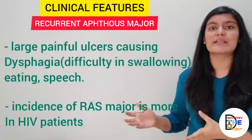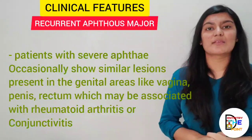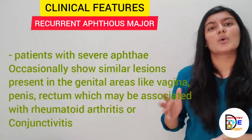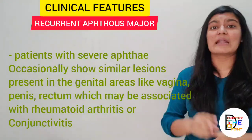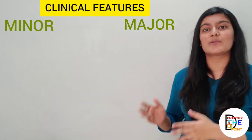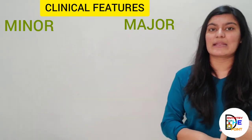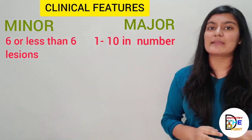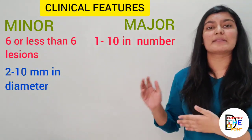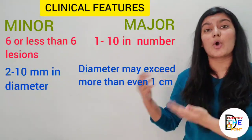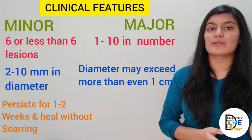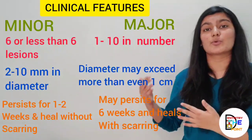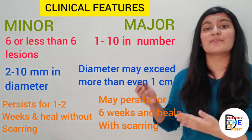The incidence of these ulcers is more commonly found in HIV-positive patients. Patients with severe aphthae occasionally show similar lesions in the genitals — vagina, penis, or rectum — which may be associated with rheumatoid arthritis or conjunctivitis. There are three distinguishing points from Recurrent Aphthous Minor: first, the number of ulcers in major can be 1 to 10 (versus 6 or fewer in minor); second, the diameter may exceed 1 cm (versus 2–10 mm in minor); third, lesions persist up to 6 weeks and heal with scarring (versus 7–14 days without scarring in minor).